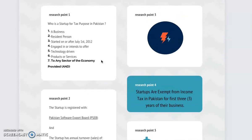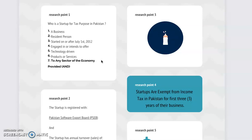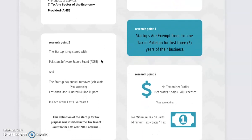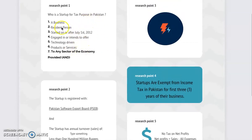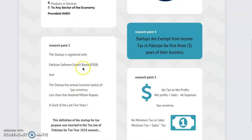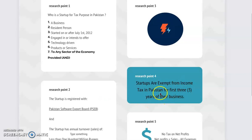You may have an idea and may have been working on it for 2 years, but you don't need this tax exemption during that time because it applies to the profits you earn. Once you start issuing sales invoices to your customers, you should consider — before issuing your first invoice — how to claim the exemption. The way to do it is to build your business, register with the Pakistan Software Export Board, and then manage your sales from there, so the income you earn will be exempt from tax.